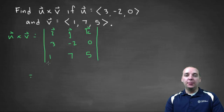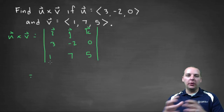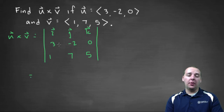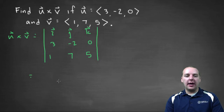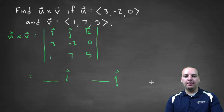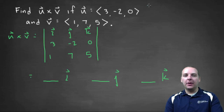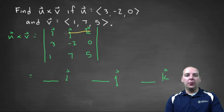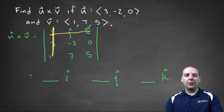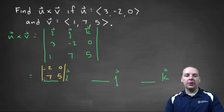The way we're going to compute this big determinant is break it down into smaller pieces. This is what's called cofactor expansion, or expansion by minors. Basically what happens is we're going to have an i, j, and k component that come out of this. To get the coefficient for, say, the i component, we delete the row and column that i is in, and we're left with four little terms — the determinant of negative 2, 0, 7, 5 — and that'll be your i component.